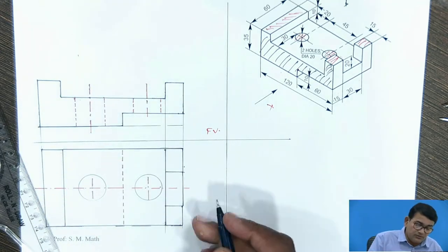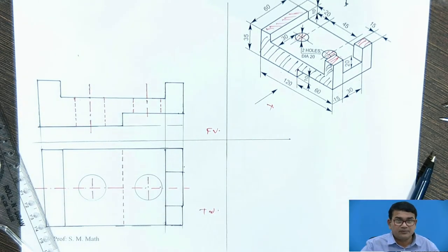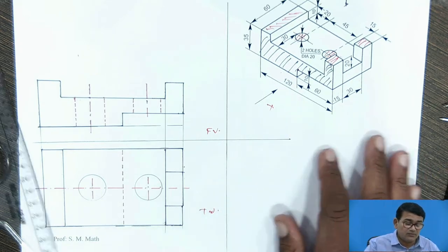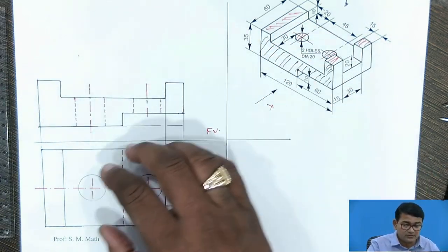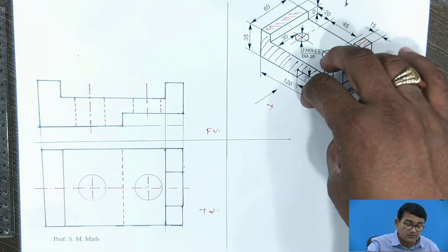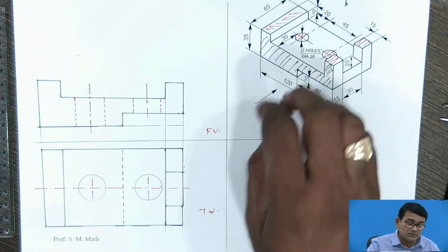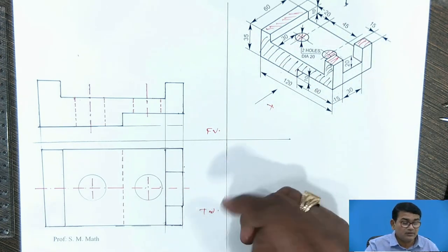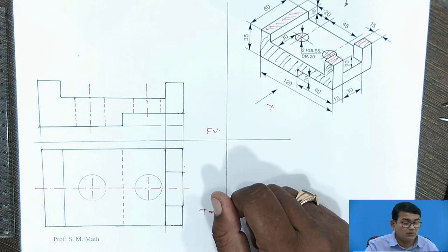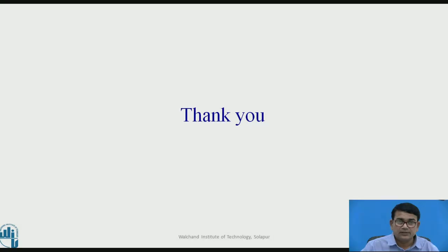This is the front view and this is the top view. Same thing: when you go for the side view, draw the respective generators from the top view and front view. Rotate the generators from the top view and you get the third angle side view — right-hand side view or left-hand side view. Thank you.